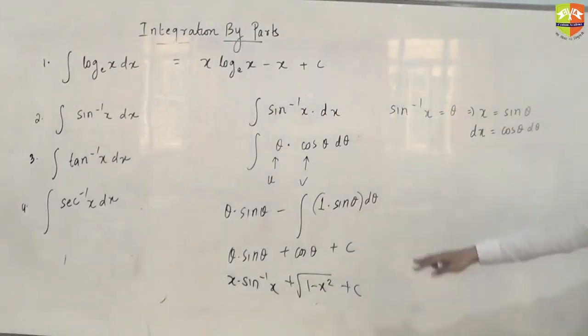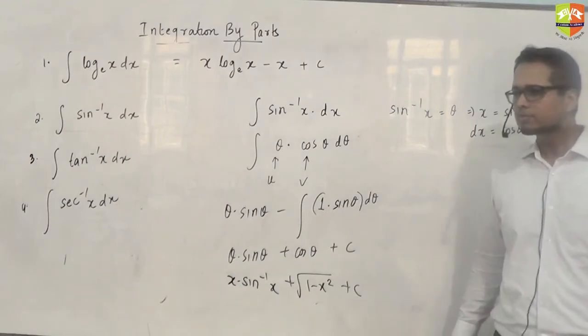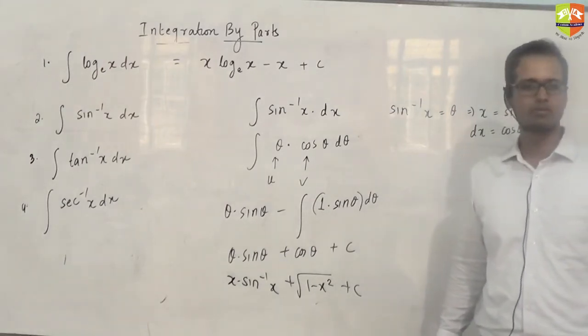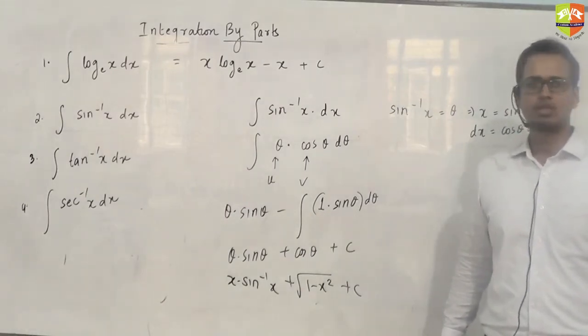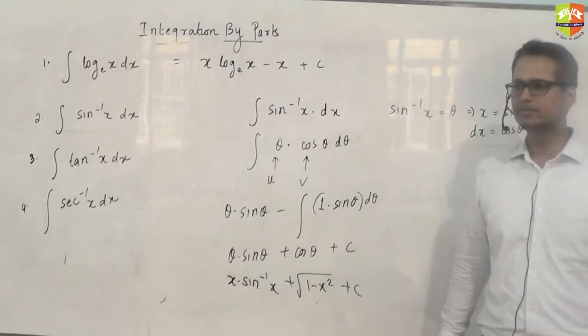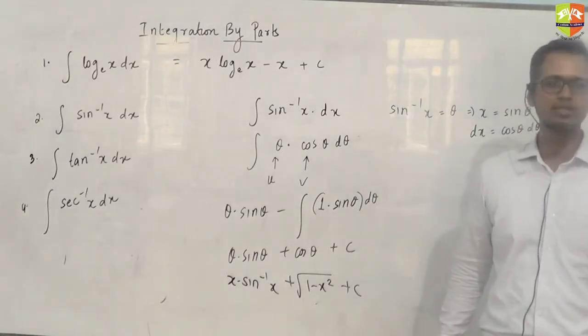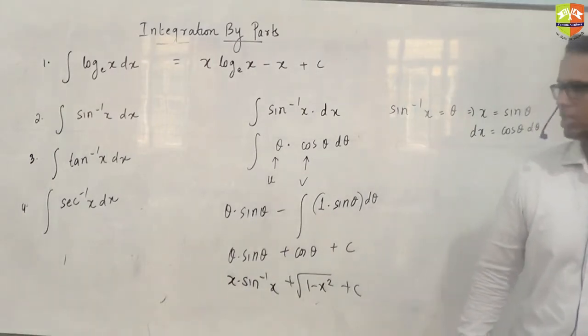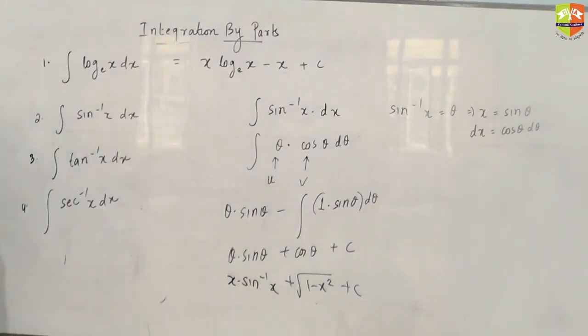Next, x tan inverse x—I'm not going to do it, however I'll tell you the answer. It is x tan inverse x minus half log(1+x²) plus c. Sec inverse x also done. Anybody struggling with sec inverse x? Good.